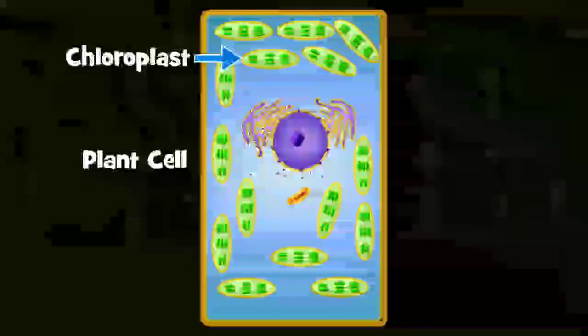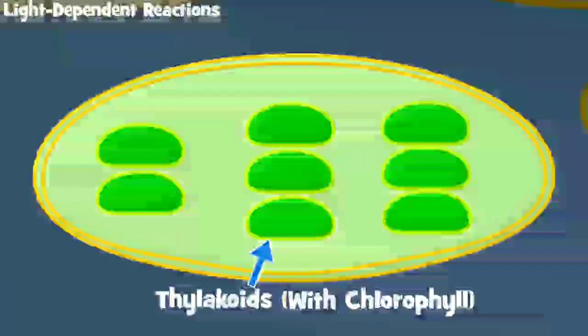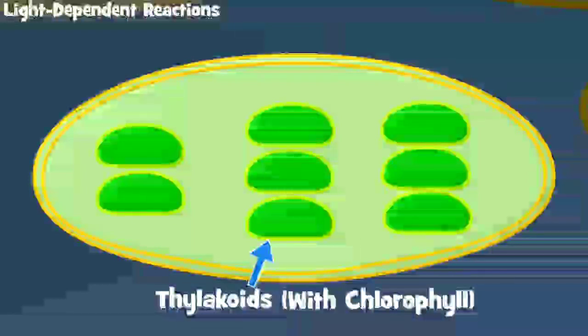Leaves are made of plant cells, and inside of these cells are special organelles called chloroplasts that do photosynthesis. Each chloroplast has many disks, called thylakoids, with pigments, like chlorophyll, that absorb light. Think of thylakoids as solar panels in the chloroplast. They absorb the light energy from the sun.